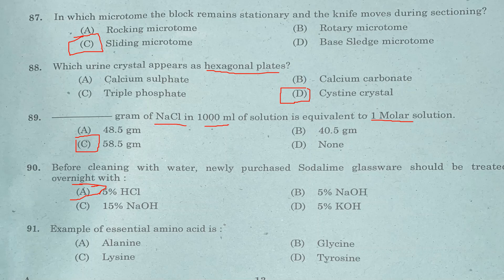Question 91: An example of an essential amino acid is — Option A: alanine. Option B: glycine. Option C: lysine. Option D: tyrosine. Answer is Option C, lysine.